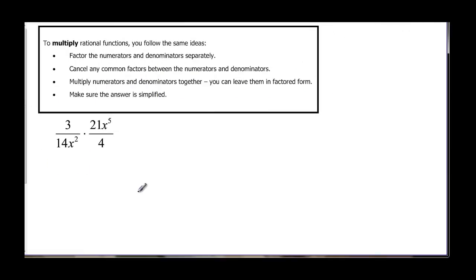So if we multiply rational functions, we've had to factor the numerators and denominators separately if they can be factored. And then we're gonna cancel any of the common factors, numerator and denominator. And then when you're done, you multiply the numerators across, and you multiply the denominators across, and you can leave it in factored form. And you just wanna make sure you might have reduced it, but you might have missed something, so double check that everything is simplified when you get done.